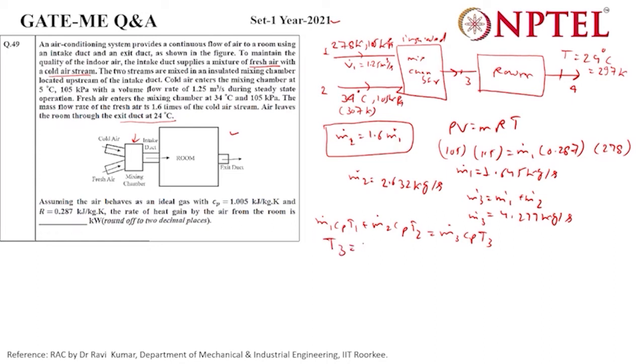When we calculate T3, it becomes 295.85 Kelvin, and if we want to convert to degrees Celsius, it becomes 22.85 degrees Celsius. This is the temperature at the exit of the chamber. This air is going to the room, so when it exits the room it will become 24 degrees.